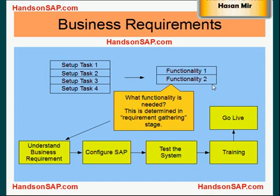What functionality is needed is determined during the business requirements stage. That stage is just for understanding the business requirements, and it could take months to complete because if the business is complicated you really need to understand it. Sometimes business process reengineering is also performed at this stage, where you determine that the business is not running in an industry-accepted manner and needs to change its processes.